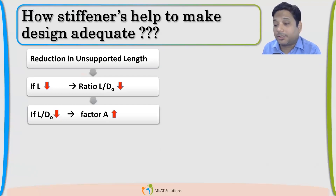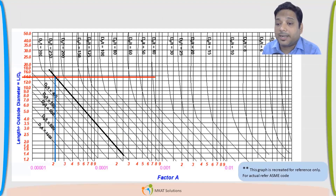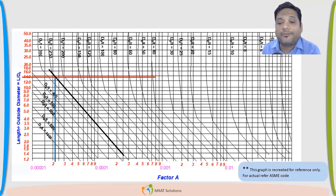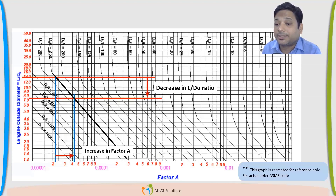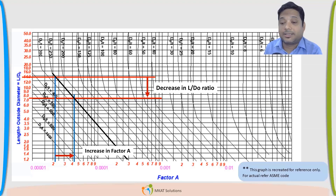D0/T is still constant, but L/D is decreasing. Just a quick recap on how we calculate Factor A: L/D is the red line, D0/T is the black line, and at their intersection, moving down gives the Factor A value. By reducing L/D, the ratio decreases, and Factor A moves in the right direction — it is increasing.